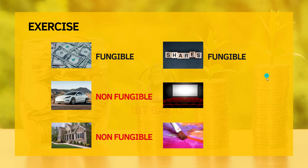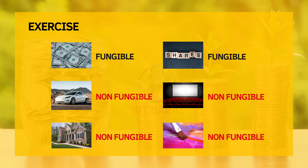Next is movies. Let's say you run a production company and you just produced a movie — will you exchange the rights of the movie with another for the same value? No, because every movie is valued differently and budget could be the main reason. So movies are non-fungible. And finally, art — we all know artworks, at least the handmade ones, are unique as every artist has their own unique style. So art is non-fungible. As you can see from this exercise, many real-world assets are in fact non-fungible, and that's the reason behind all the hype around NFTs.